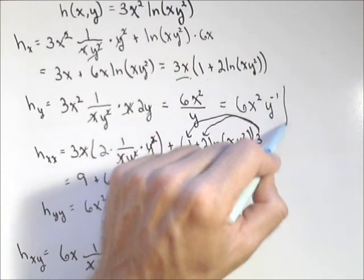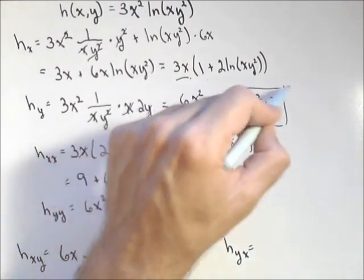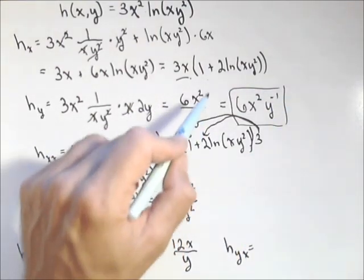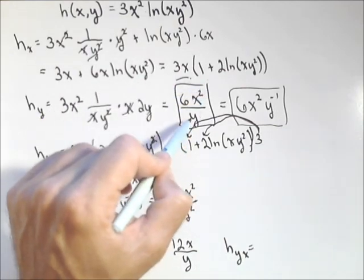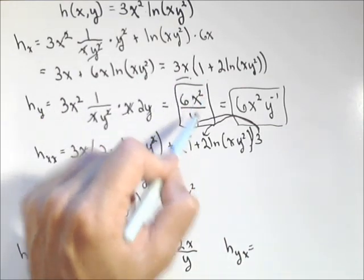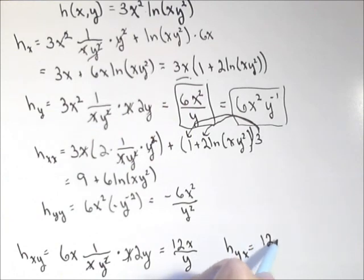Here's our h sub y. I'm gonna do this with respect to x. Actually, we can do it right from here. Remember, y is a constant. So basically, I'm just taking the derivative of six x squared, which is 12x over y. Looks good. Checks out.